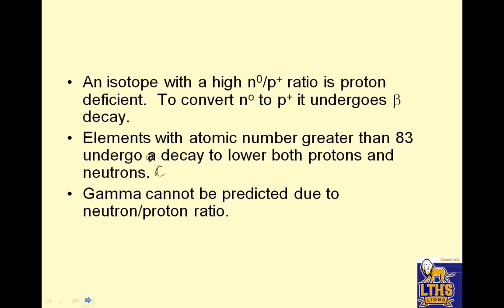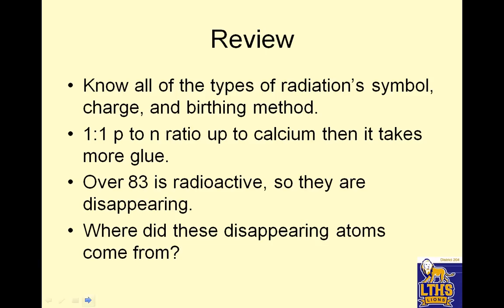Gamma cannot be predicted due to the neutron-proton ratio. Well, so sad. Review. Know all the types of radiation's symbol, charge and birthing method. You don't actually need to know the birthing method. A one-to-one proton to neutron ratio up to calcium. Oh, I got rid of that one. Over 83 is radioactive, so they are disappearing. So these atoms are actually going away.